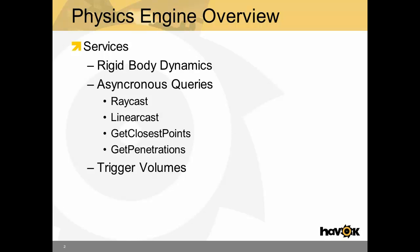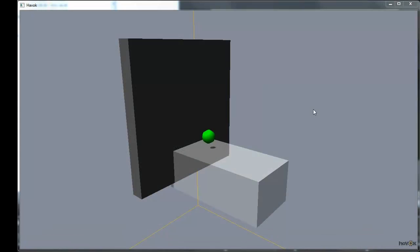Another service physics engines often provide are trigger volumes. Trigger volumes may use the above services, but what they do is they call back into user code when objects are entered or exited. This is often very useful for things like playing sound effects or triggering game events.